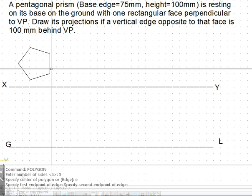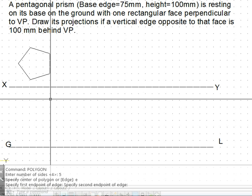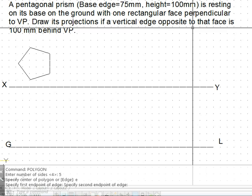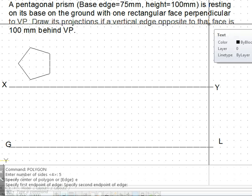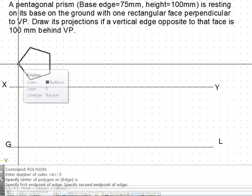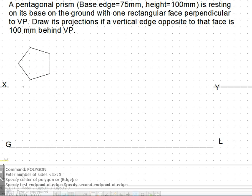So, the base edge here is perpendicular to VP. Draw its projections if the vertical edge opposite to that face is 100 mm behind VP. Now currently the vertical edge, so all the corners here basically represent the edges.